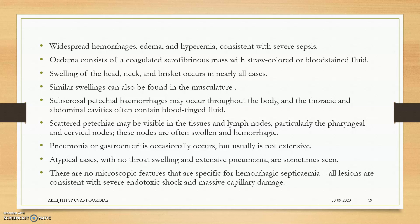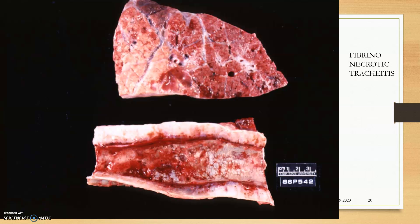Pharyngeal and cervical lymph nodes will be swollen and congested due to the high amount of bacteria present. Sub-serosal petechial hemorrhages and generalized congestion in the lungs, plus fibro-necrotic lesions in the lungs, are observed. In calves, hemorrhagic gastroenteritis may occur, with bacteria acting at the villi. Gross lesions will be minimal in animals that have died very quickly, as the bacteria will not have sufficient time to produce many lesions. Widespread hemorrhage, edema, and hyperemia are consistent with severe sepsis due to the toxins and bacteria. Swelling of the head, neck, and brisket occurs in nearly all cases.